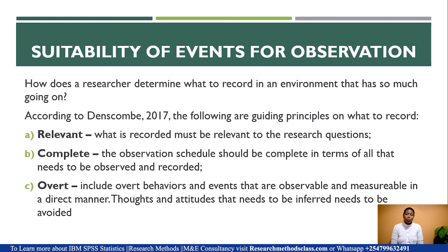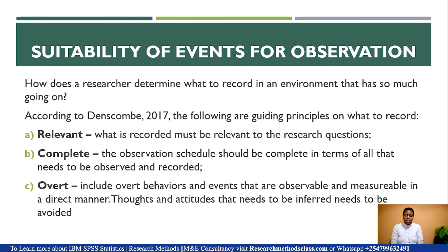How does a researcher determine what to record in an environment with so much going on? The researcher should be guided by the following principles. First, relevance — what is recorded must be relevant to the research questions. Second, completeness — the observation schedule should be complete in terms of all that needs to be observed and recorded. Third, overt — include overt behaviors and events that are observable and measurable in a direct manner. Thoughts and attitudes that need to be inferred should be avoided as much as possible.